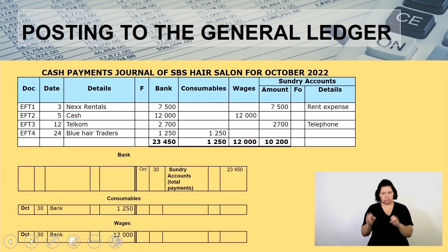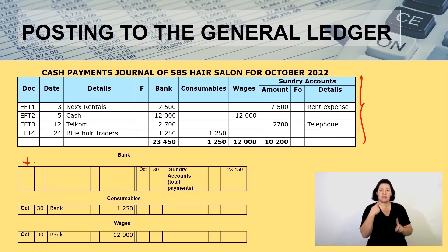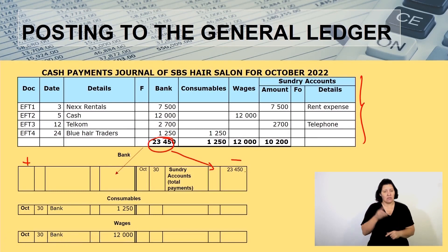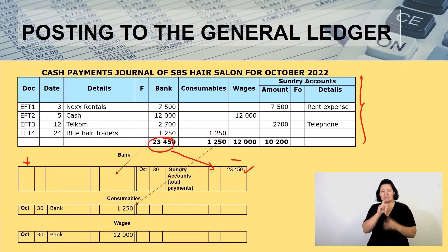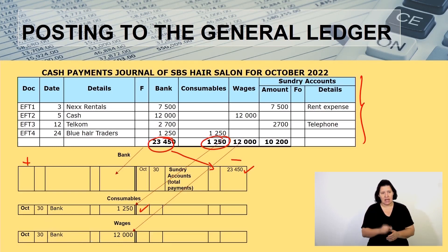Here we have our completed CPJ and we are now going to post. The first account to post to is the bank account — since we are paying, the bank decreases. So 23,450 is posted into the bank account. The next posting goes to consumables: 1,250. Then wages comes to your wages account — remember this is an expense account, hence we are debiting it.